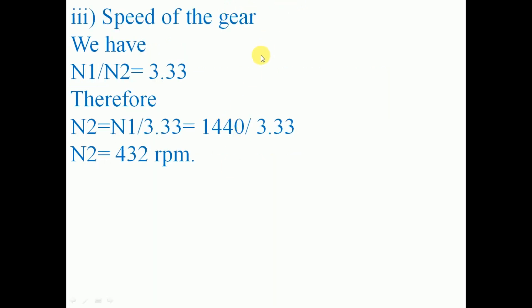Third, we find the speed of the gear. Using the gear ratio: n1/n2 = 3.33, therefore n2 = n1/3.33 = 1440/3.33 = 432 rpm. This concludes the numerical problem.